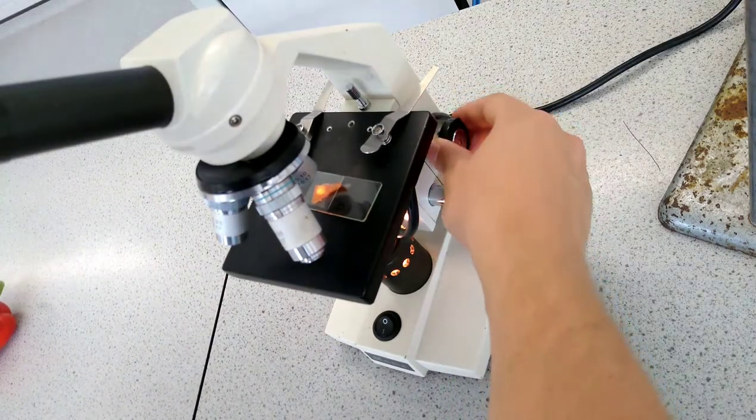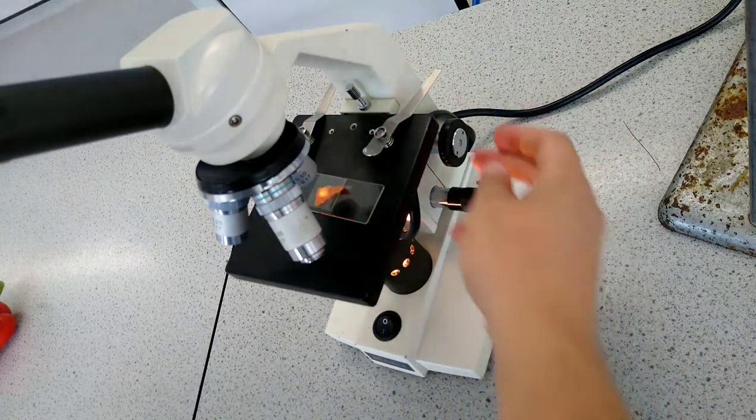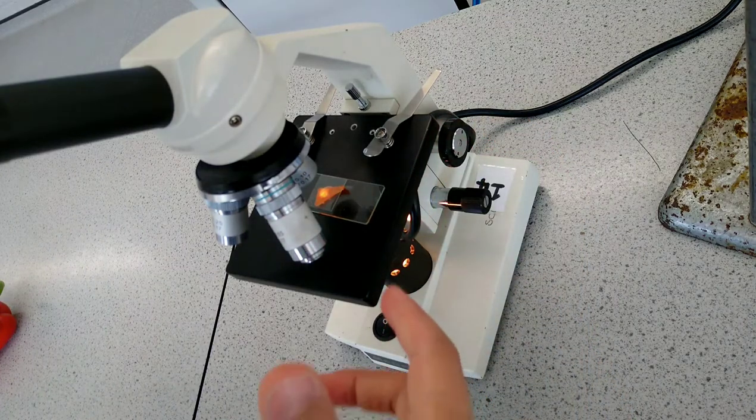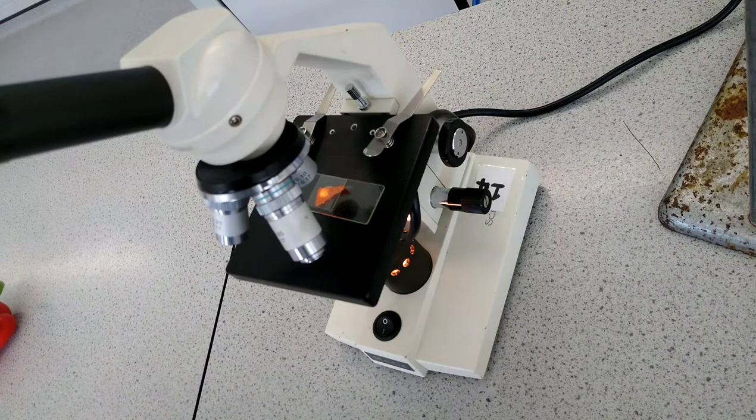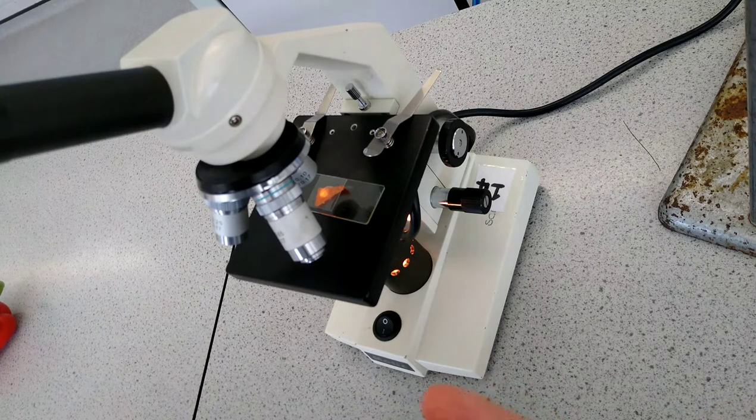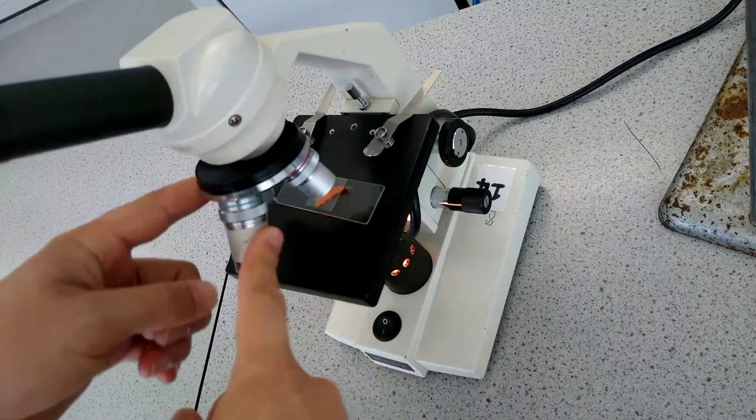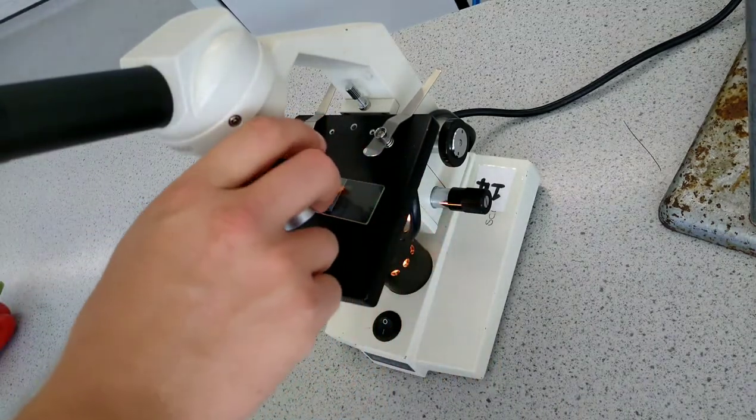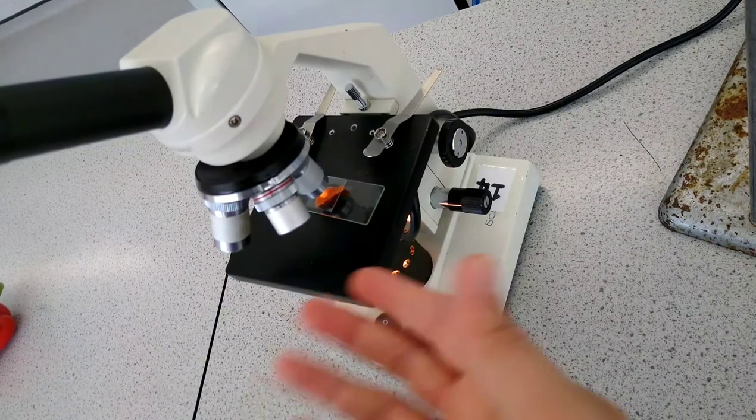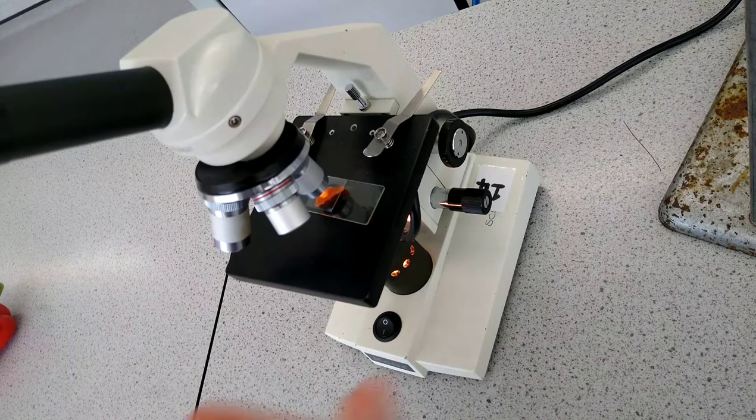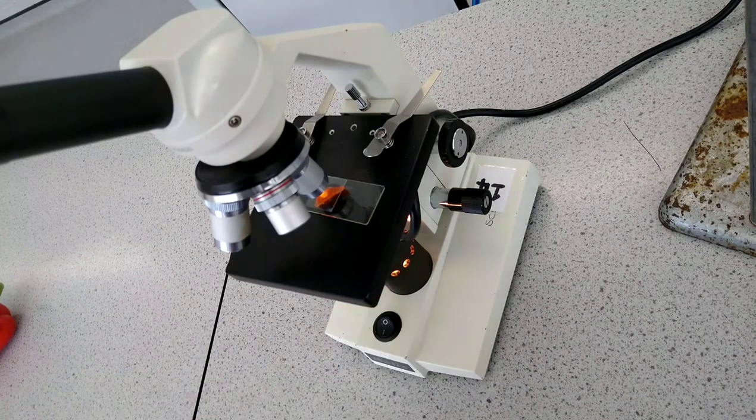In order to do that, I'm going to need to slowly move the stage away from myself by using this larger knob, and I'm going to turn that until it comes into focus. Once I manage to do that, I can switch to the second of these rotating lenses, which is more powerful. And that's going to give me a photo or a picture through the microscope that's even more detailed and with a greater magnification.